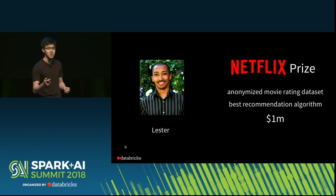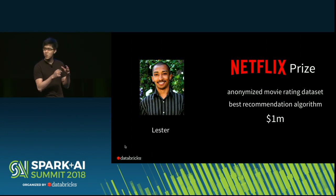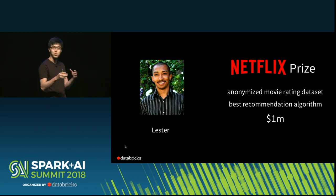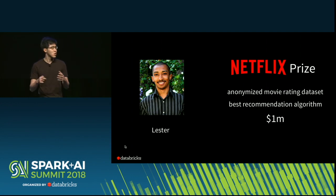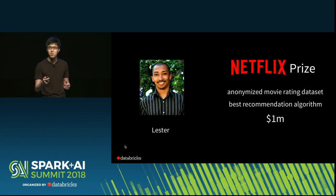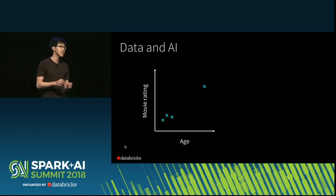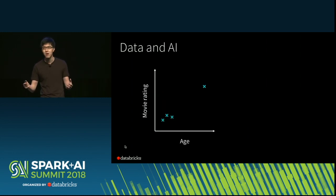But more importantly, Lester had been working on toy academic machine learning problems without access to real-world data sets. When he saw this competition, he jumped on it. To actually win the $1 million and come up with the best recommendation algorithm, Lester wanted access to a lot of data — all the data, as a matter of fact, in the data set.